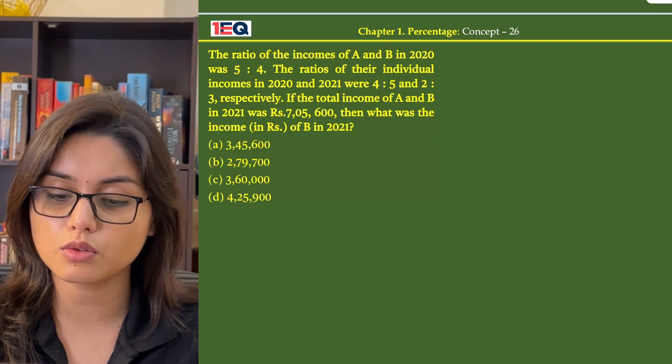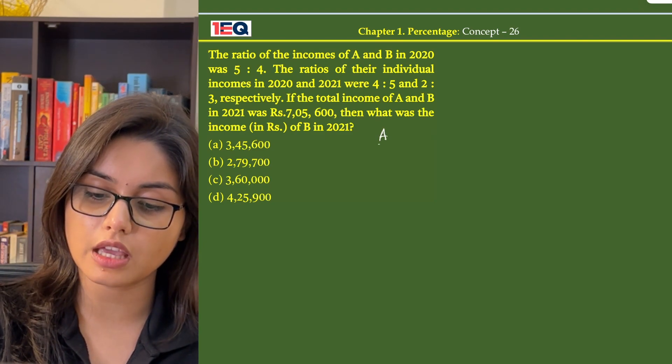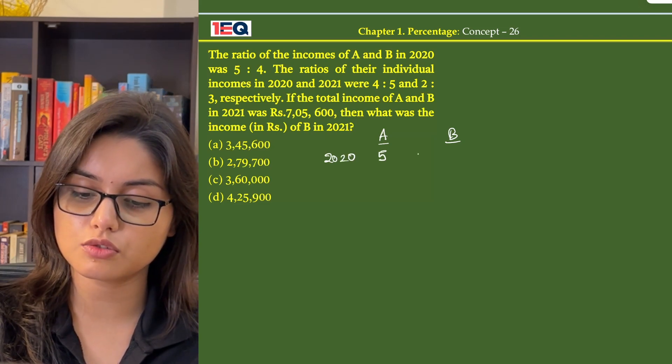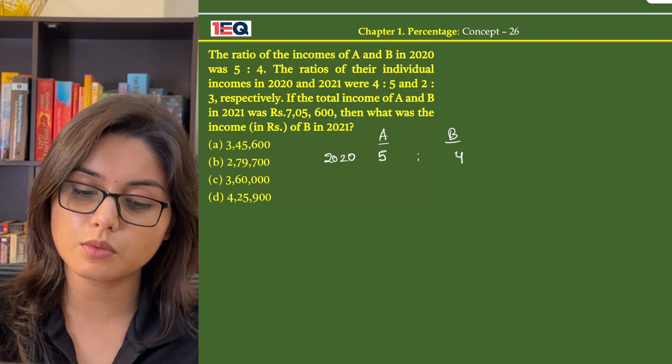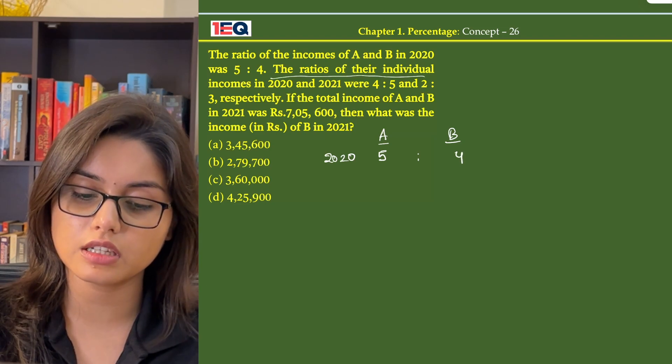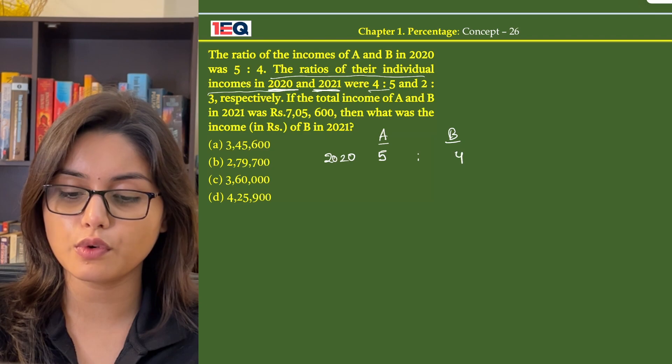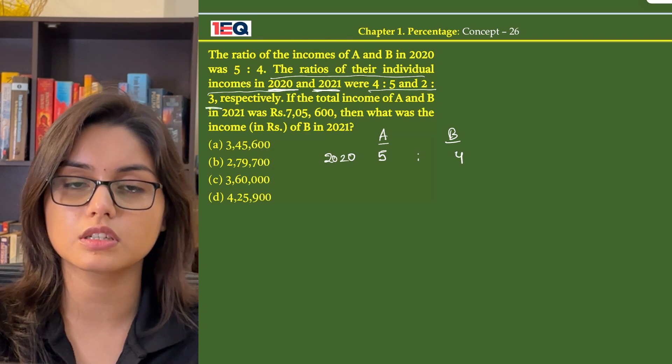So given in the question, we know that the income ratio of A to B in 2020 is 5 to 4. Then the question says that the ratios of their individual incomes in 2020 and 2021 were 4 to 5 and 2 to 3 respectively.